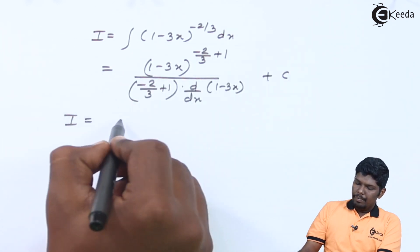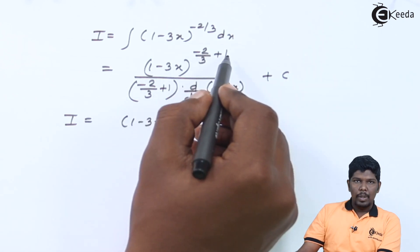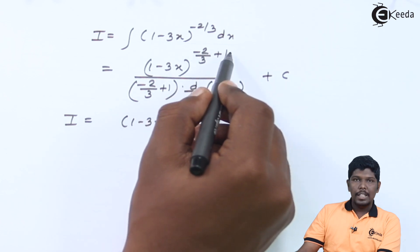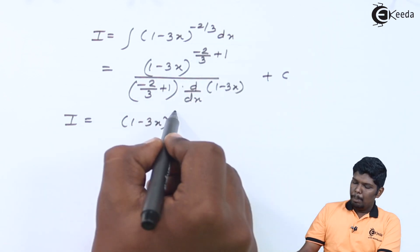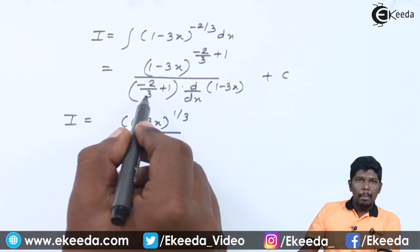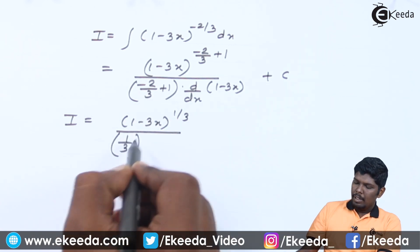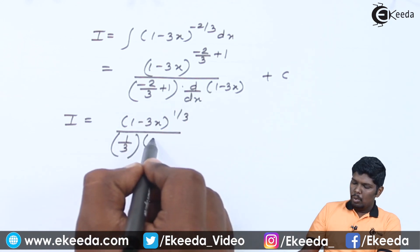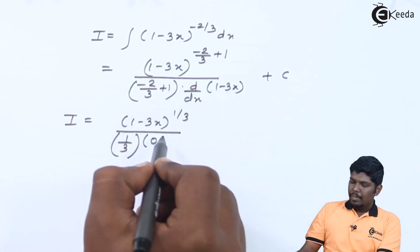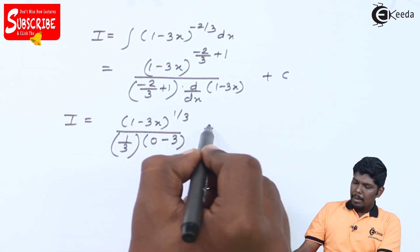I will be (1 minus 3x), minus 2 by 3 plus 1, that will give you minus 2 plus 3 upon 3, which will give you plus 1 upon 3, divided by again minus 2 upon 3 plus 1, will give you 1 upon 3. Derivative of 1 is 0, minus 3 as it is, derivative of x is 1, plus c.